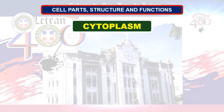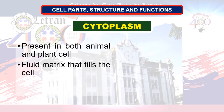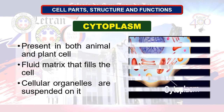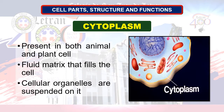Next organelle: cytoplasm. Present in both animal and plant cells. Cytoplasm is the protoplasm outside the nucleus. It contains several structures and cell organelles, such as endoplasmic reticulum, Golgi body, mitochondria, lysosome, and vacuole. Cellular organelles are suspended on it. It is the fluid matrix that fills the cell.